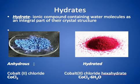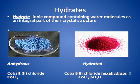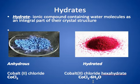Anhydrous means without water — cobalt(II) chloride looks blue in its anhydrous form. When the water is embedded in it, it's called the hydrated form. It has the hexahydrate in it because there are six water molecules attached. This number six could change for the hydrate — it could be one, two, three, eight — it depends on the situation. Whatever that number is, we use the prefix from covalent naming.